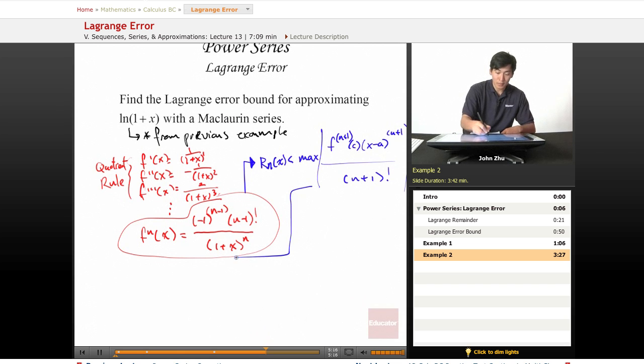Let's go ahead and rework this and plug in every component. The error bound here is defined by the max value of the absolute value of (-1)^n—here n+1—n-1+1 is just n, so n factorial,